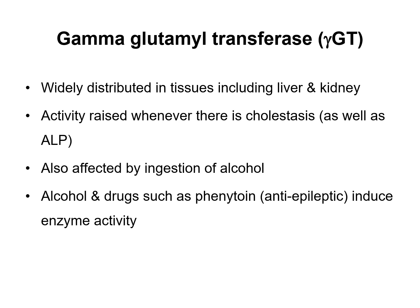Gamma glutamyl transferase (GGT) is widely distributed in tissues including the liver and kidney. This enzyme is increased in cholestasis, similar to ALP, and is also affected by ingestion of alcohol — so when you have consumed alcohol, your GGT levels will be increased. Alcohol and other drugs such as phenytoin, an anti-epileptic, also induce enzyme activity.